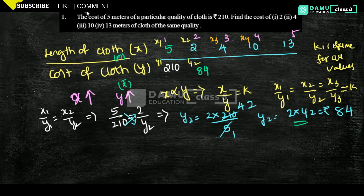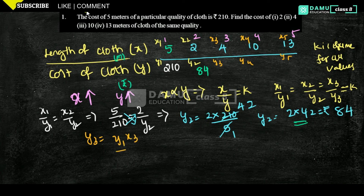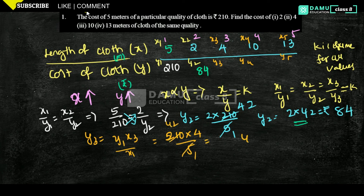For Y3, using the formula Y3 equals Y1 by X1 into X3: that is 210 by 5 into 4, which gives 42 into 4. So Y3 equals 168 rupees. The cost of 4 meters of cloth is 168 rupees.